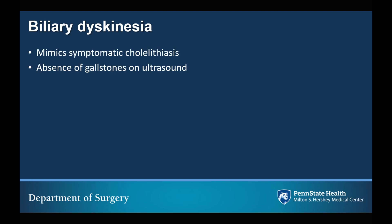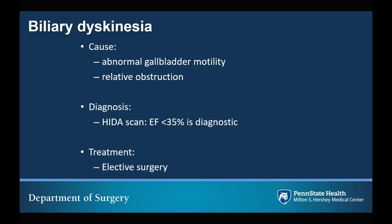Biliary dyskinesia mimics symptomatic cholelithiasis; however, when you obtain an ultrasound for diagnosis, there are no gallstones present. Biliary dyskinesia actually results from abnormal gallbladder motility, which causes a relative obstruction of the cystic duct without any actual physical obstruction from a gallstone. This is diagnosed using a HIDA scan. It's important when you order a HIDA scan for biliary dyskinesia that you request an ejection fraction — an ejection fraction of less than 35% is considered diagnostic. Patients that present with biliary dyskinesia are treated with elective surgery.